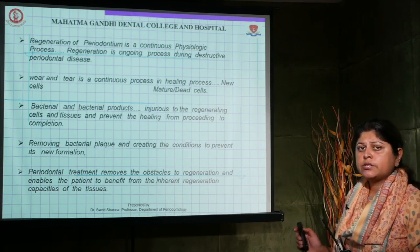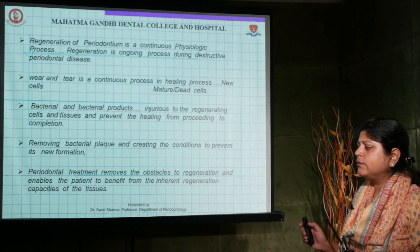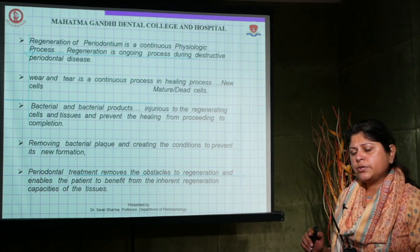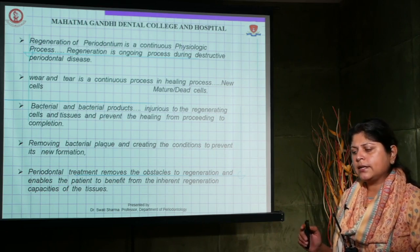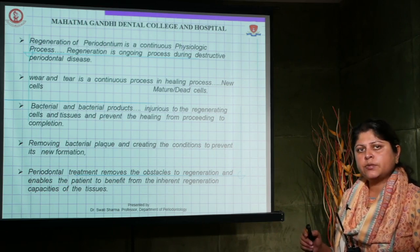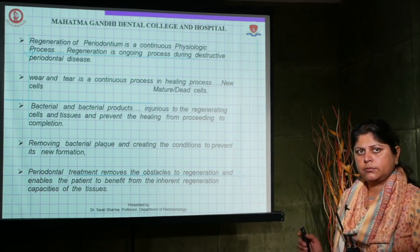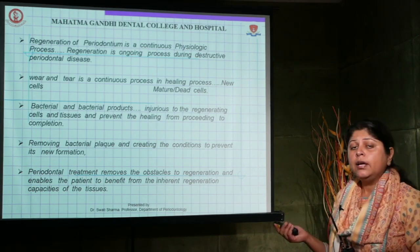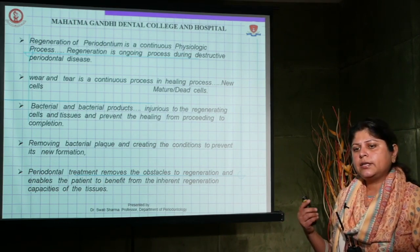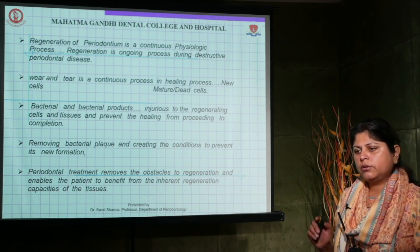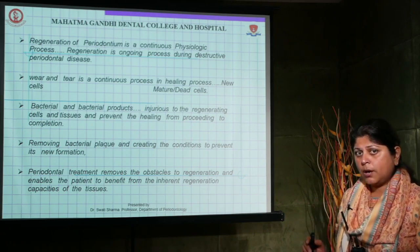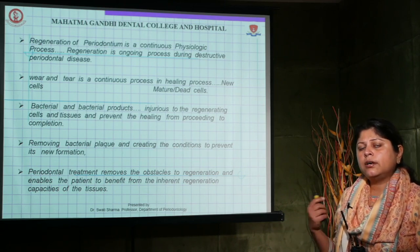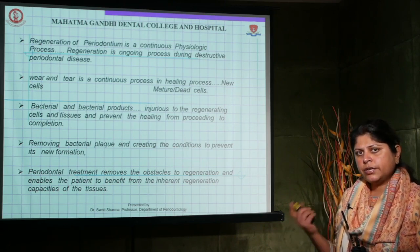Regeneration of the periodontium is a continuous, ongoing process. During destructive periodontal disease, the disease occurs in phases of exacerbation and remission — sometimes the destruction process stops and regeneration starts; at other times, degeneration resumes and regeneration halts.